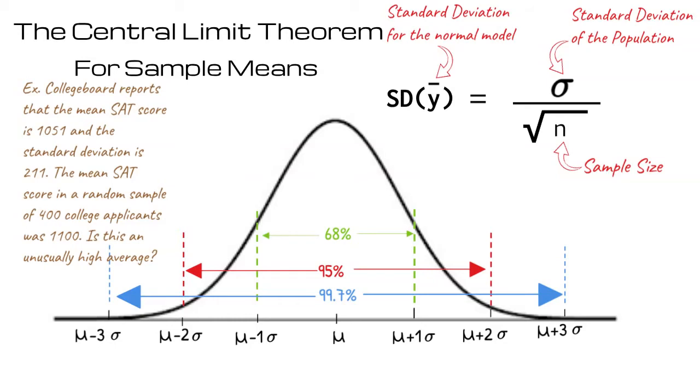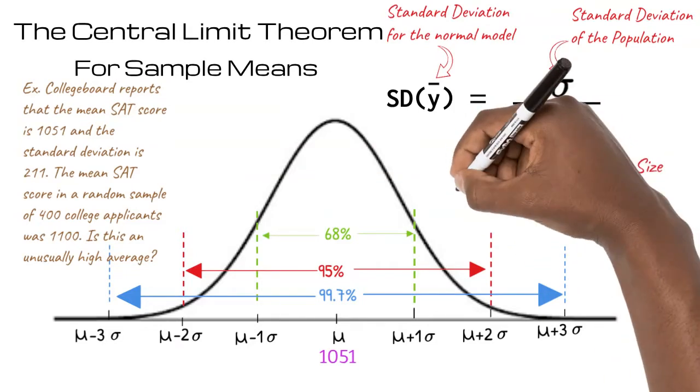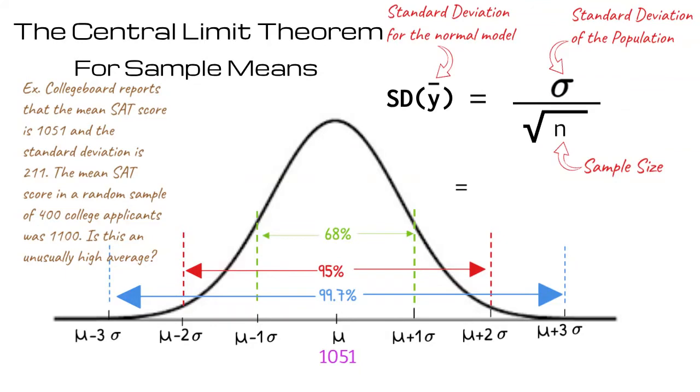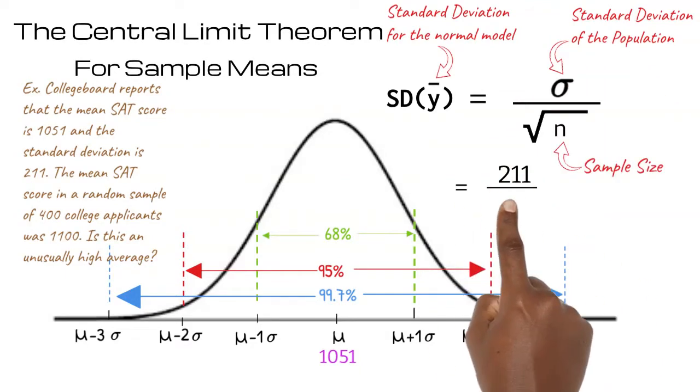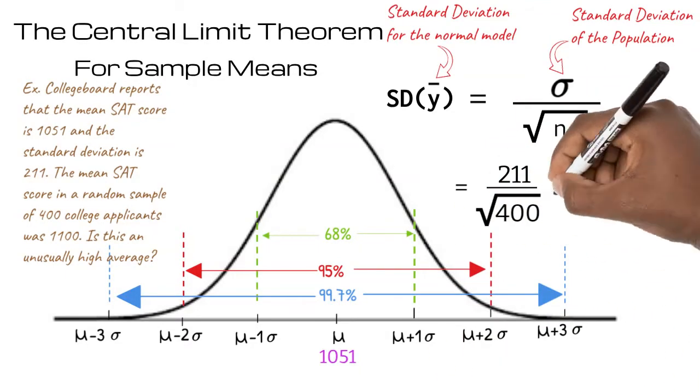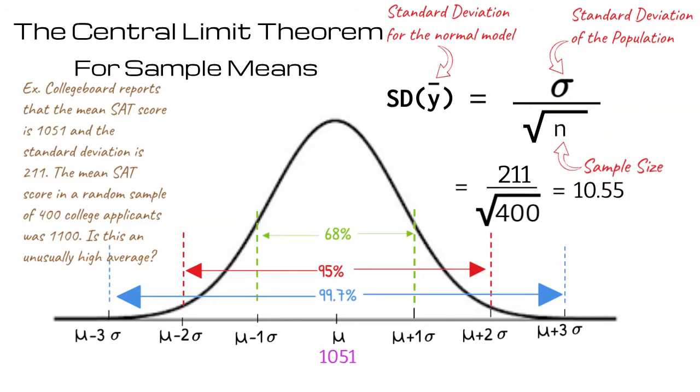Our population mean is provided, 1051. We calculate the standard deviation for the normal model using the formula. Standard deviation for the normal model equals the standard deviation of the population over the square root of the sample size. 211 over the square root of 400. This gives us 10.55.